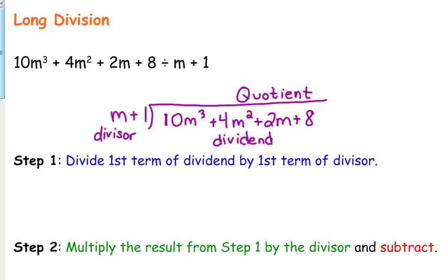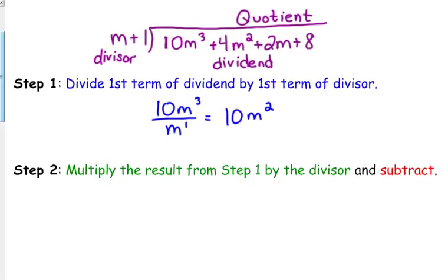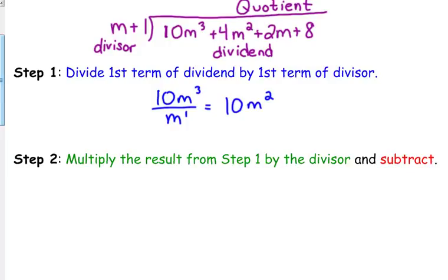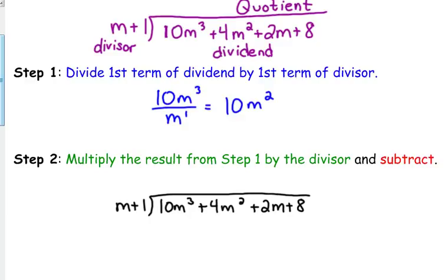Our steps say: divide the first term of the dividend — in this case 10m cubed — by the first term of the divisor, which is m. Our exponent rules say that we subtract those exponents, so that gives us 10m squared. That is the first thing that's going to go on top of the house, lined up with the m squared term under the house.